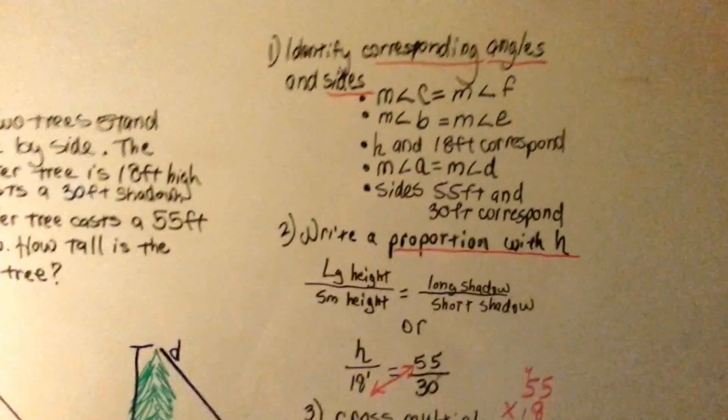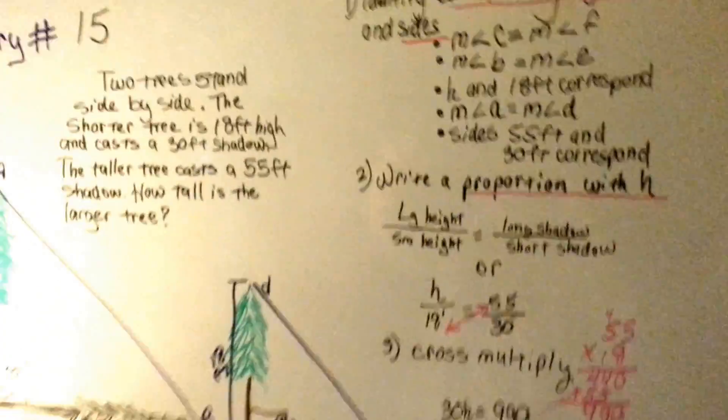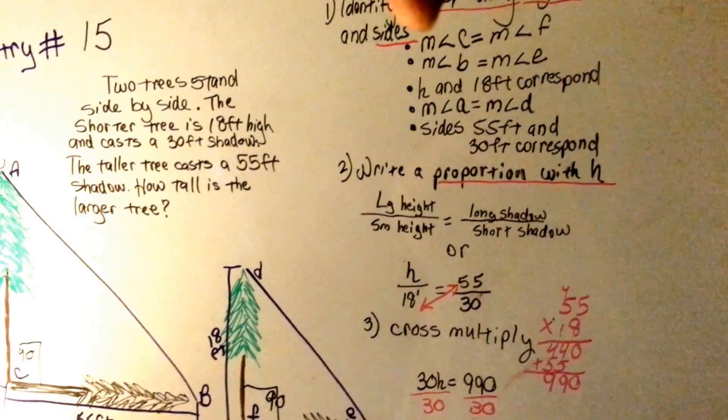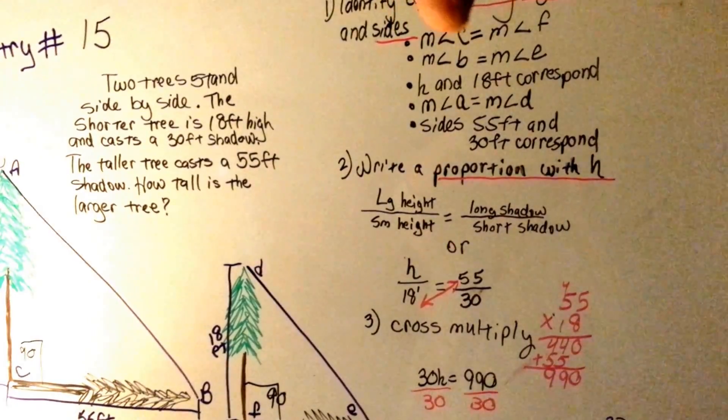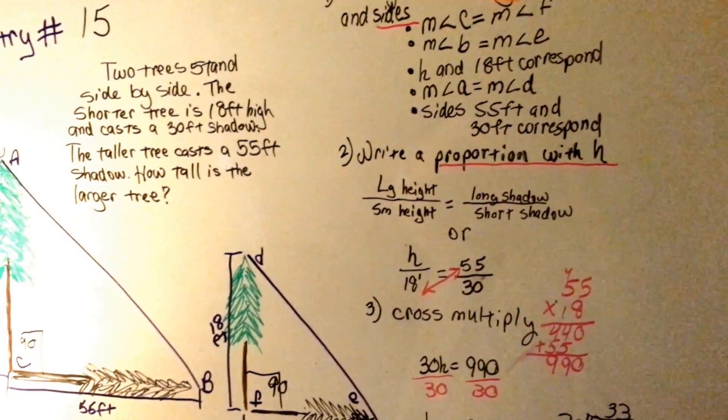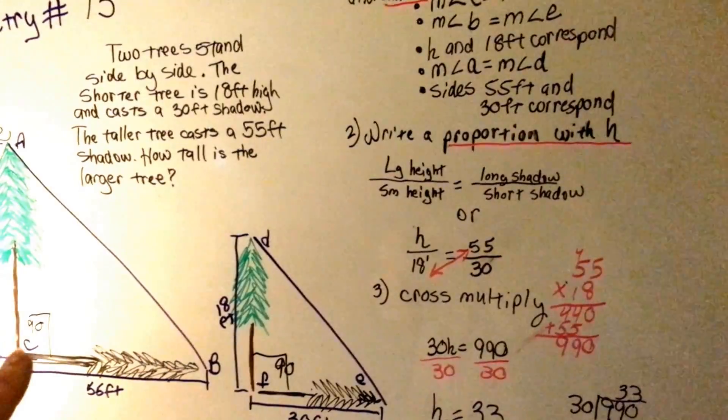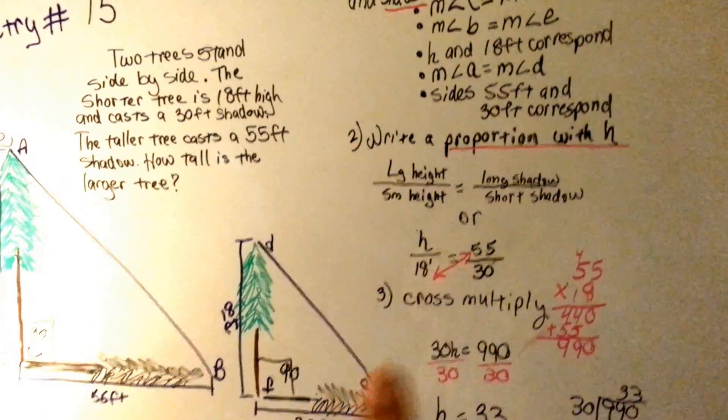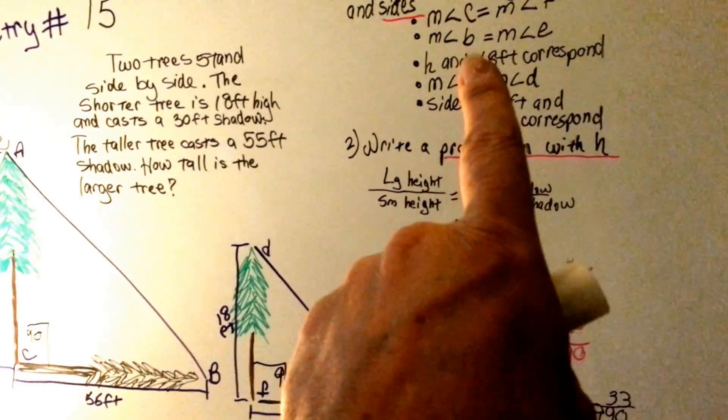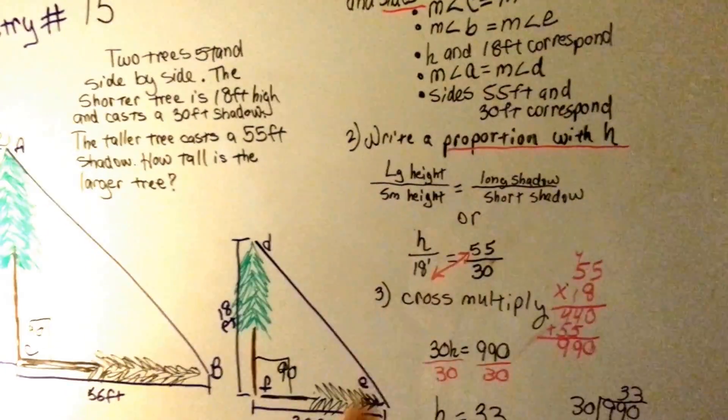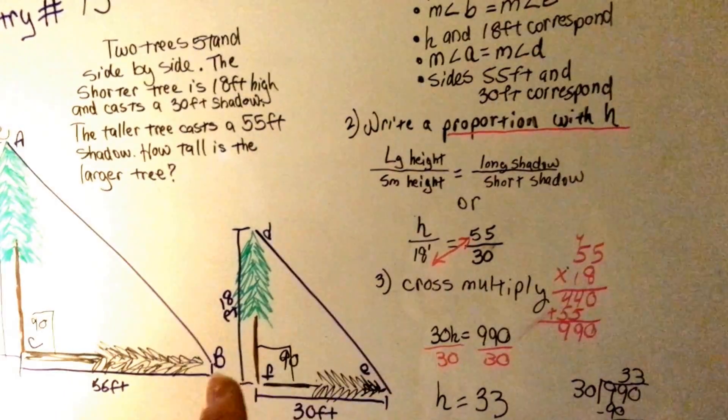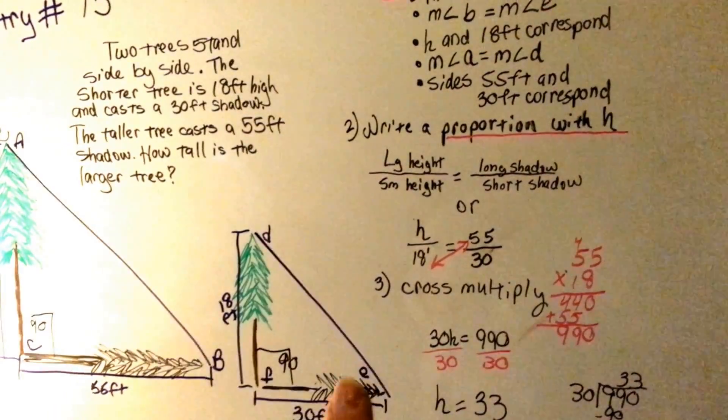So we're going to identify the corresponding angles and sides. Let me back up a little bit so you can see. We've got the measure of angle C is equal to the measure of angle F. Where's angle C? Right there, and F? Right there. Okay, well we know those are both 90 degrees. The measure of angle B and the measure of angle E are equal. Here's B, and here's E. They're equal, whatever they are.